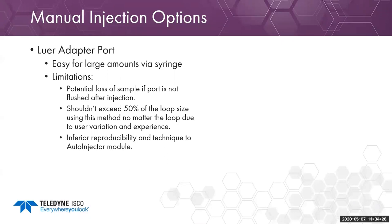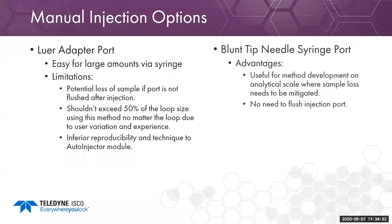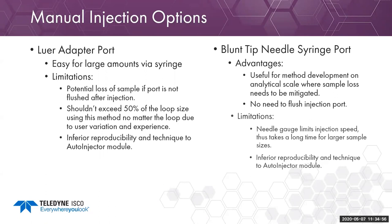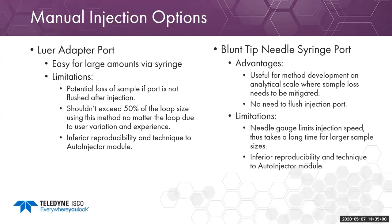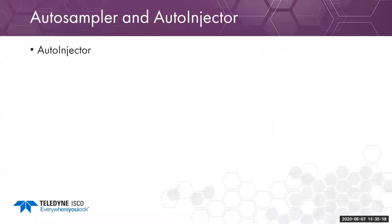Manual injection via luer port has inferior reproducibility compared to auto injection or auto samplers. Another alternative is the blunt tip needle port, which is useful for method development at analytical scale or when sample loss needs to be mitigated, since you inject right at the rotor valve and seal. Limitations include the needle gauge size not being optimal for prep scale injections with larger volumes, and inferior reproducibility versus the auto injector and auto sampling modules.